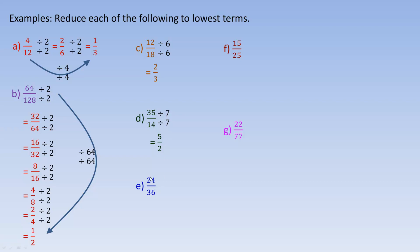For 24/36, they're even, but there's a larger common factor. Thinking of the 12 times table: 24 is two dozen and 36 is three dozen, so both are multiples of 12. Dividing 24 by 12 gives 2, and 36 by 12 gives 3, so the lowest terms is 2/3. For 15/25, they both end in 5, so 5 divides into both. 15 divided by 5 is 3, and 25 divided by 5 is 5, giving 3/5.